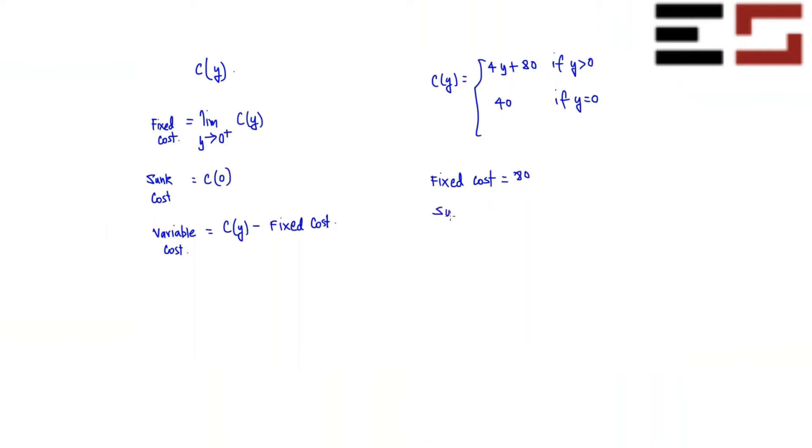Now, what is the sunk cost? 40. And what is the variable cost? It is 4Y. Good.